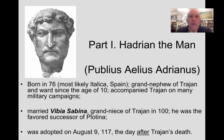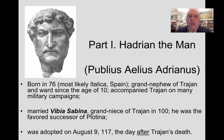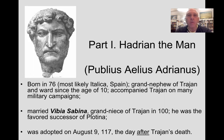He was the grand nephew of the emperor Trajan and was his ward since the age of 10. We know that he was a military man, a soldier — he accompanied Trajan on many of his military campaigns. Eventually, he married Trajan's grand niece, a woman by the name of Vibia Sabina, known as Sabina, and he married her in the year 100.